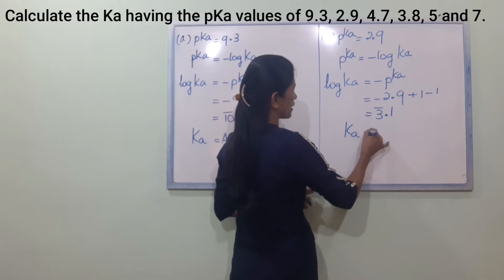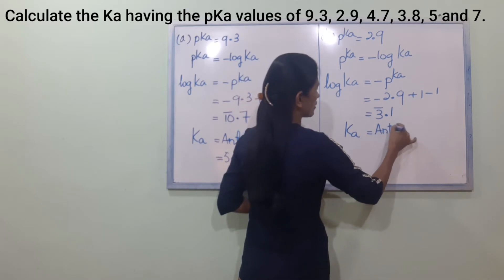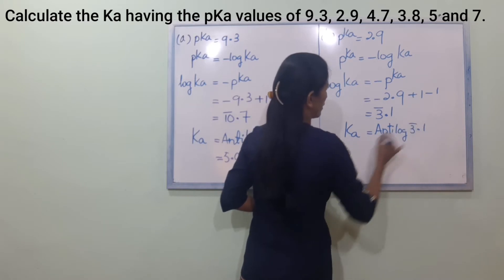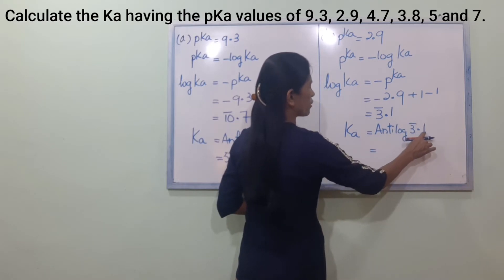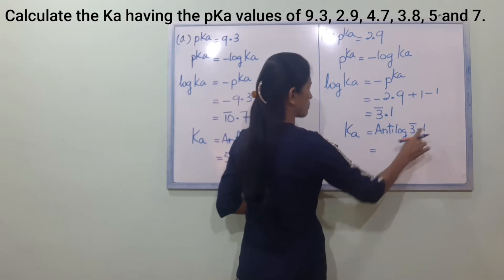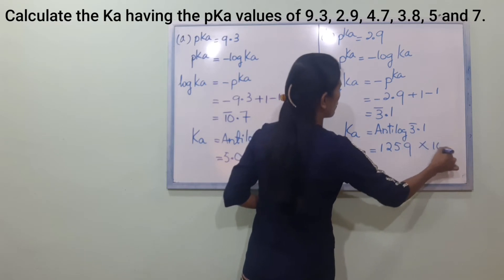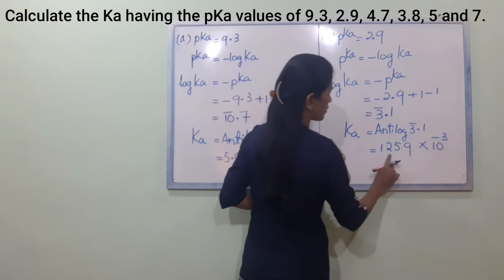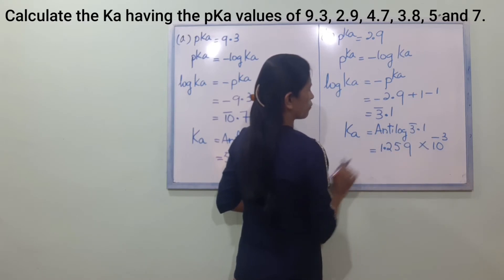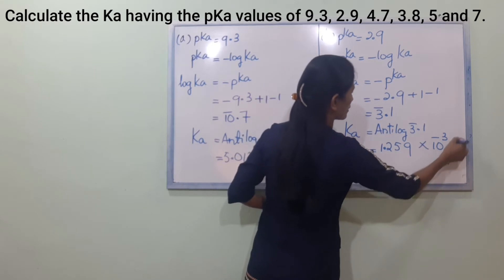Ka is equal to antilog of minus 2.9, which is antilog of 33.1. The result is 1.259 into 10 power minus 3.